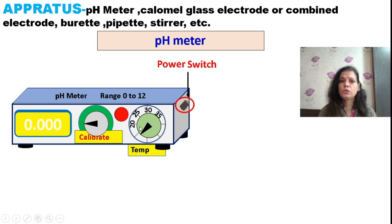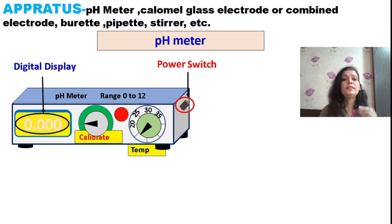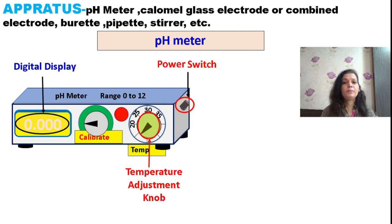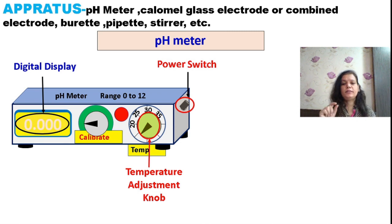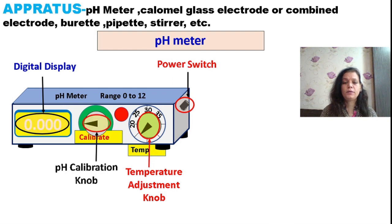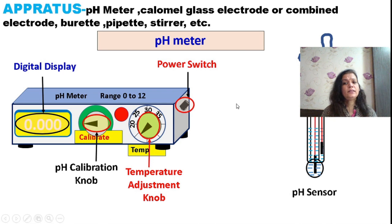Here is the pH meter shown in digital form. This is the power switch — you switch on the instrument, and a digital display shows the pH of the solution. There are two knobs: one is the temperature adjustment knob, where you set the room temperature, and the other is the calibration knob for pH.